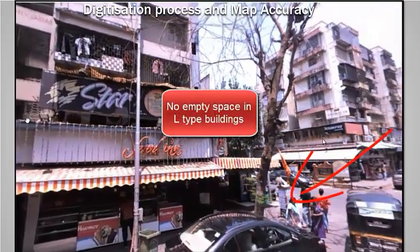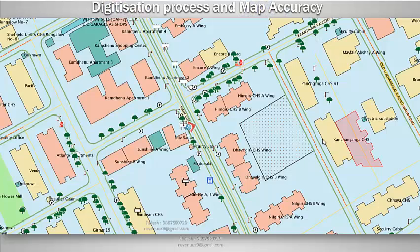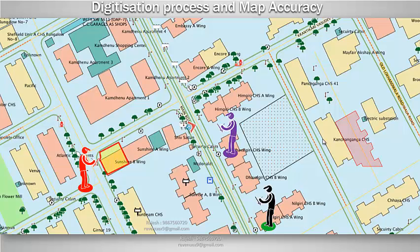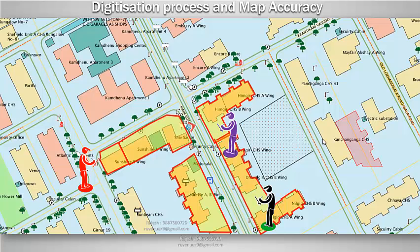It means when surveyors go to capture data, they may not have the base polygon to attach information regarding the shop line and G plus one extension. Thus, G map is a requirement of the time.